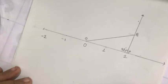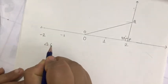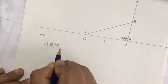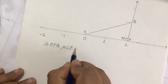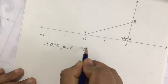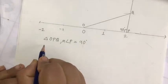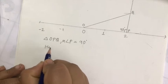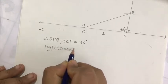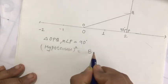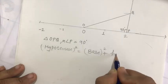Now since you know that this triangle OPQ is forming a right angle triangle where the measure of angle P is equal to 90 degrees.